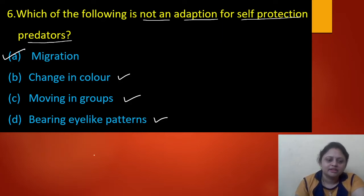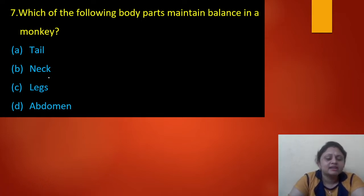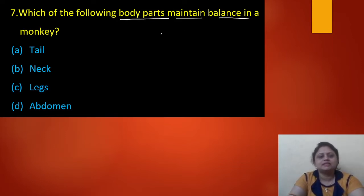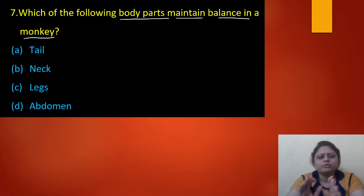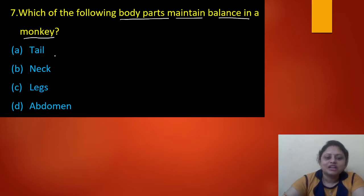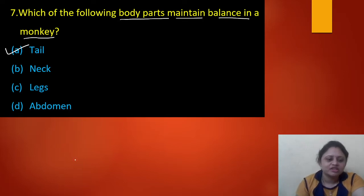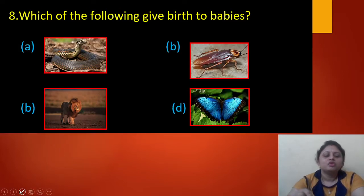Next question: which of the following body parts maintains balance in a monkey? Option A: tail. Option B: neck. Option C: legs. Option D: abdomen. Monkeys use their tail to maintain balance, so the correct answer is option A — tail.